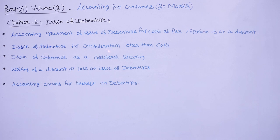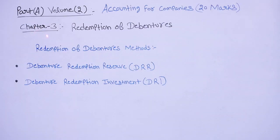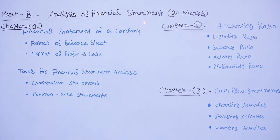You will also learn issue of debentures for consideration other than cash, issue of debentures as collateral security. When a company issues debentures at a discount, there is a loss that needs to be written off. We will also learn accounting entries for interest on debentures. Chapter 3 is redemption of debentures — there are various methods to pay off debentures, including Debenture Redemption Reserve (DRR) and Debenture Redemption Investment (DRI).